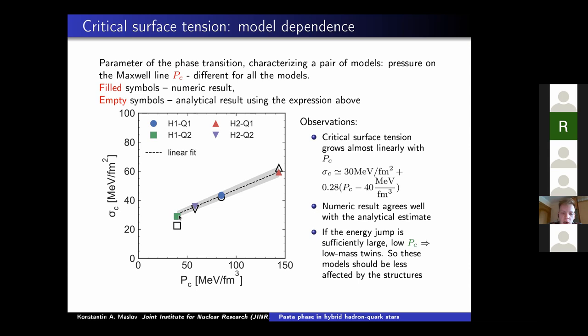And here's the critical values of the surface tension, which are growing with the pressure of the Maxwell construction. So the larger is the pressure, the later the phase transition, the greater the critical surface tension. Which means that for low mass twins, models maybe should be less affected by the structures. But we still don't know the sigma, but how one could use all these results or fits.